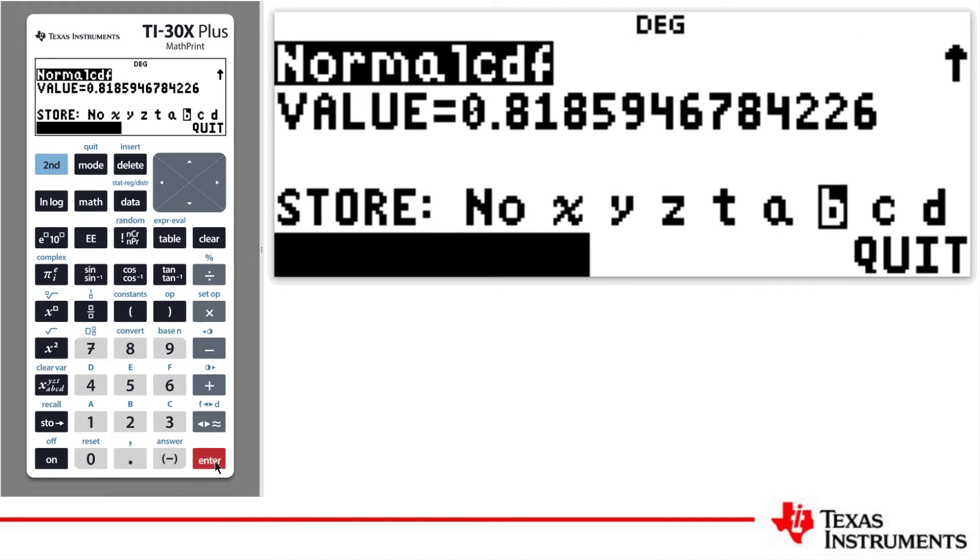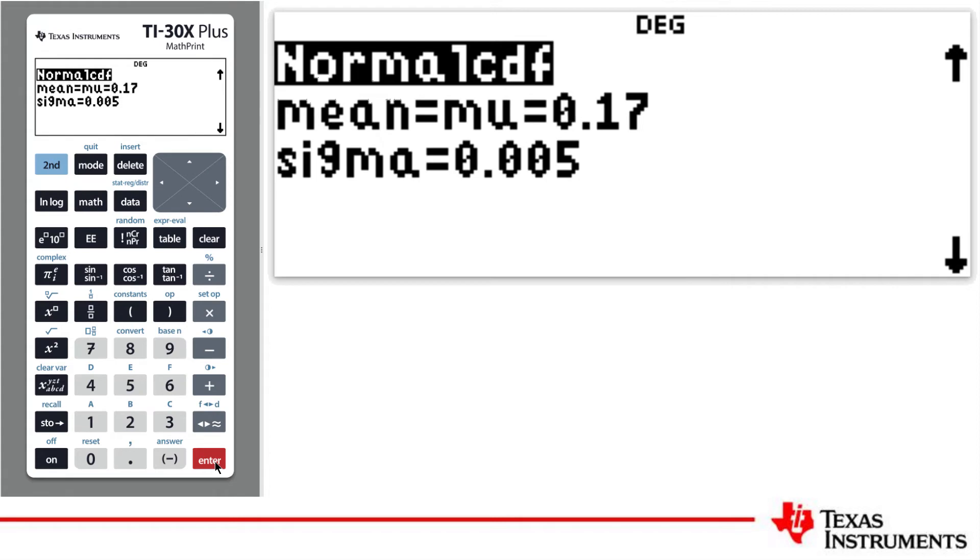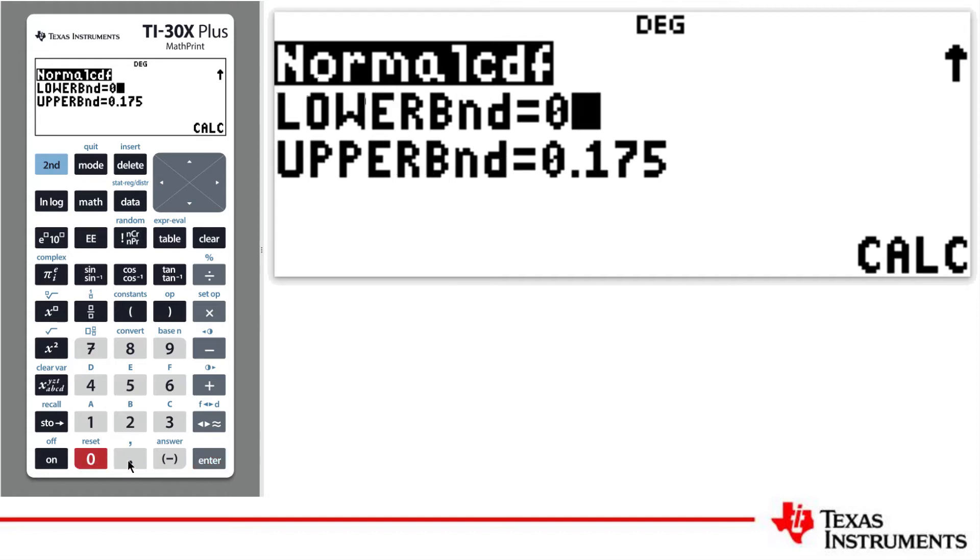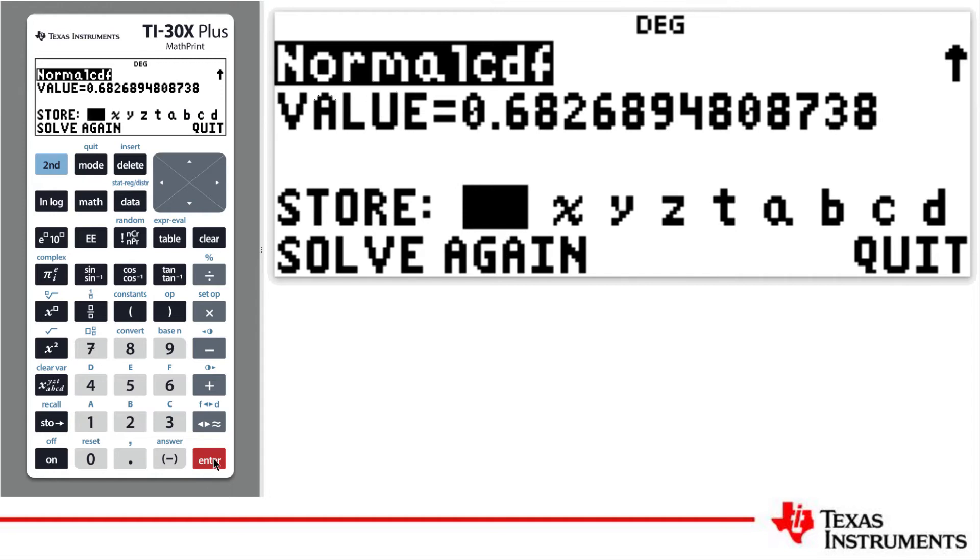As I have another related problem to solve, I will select Solve Again. This time, we need to determine the intersection of A and B. The mean and standard deviation are the same as before. The intersection of A and B aligns to beans weighing between 0.165 and 0.175 grams. I will store the intersection of A and B in C.